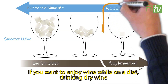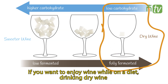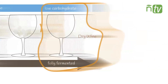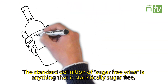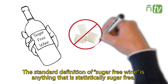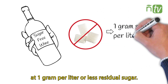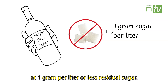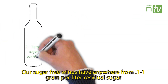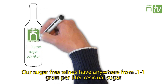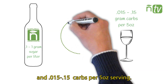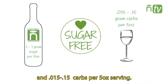If you want to enjoy wine while on a diet, drinking dry wine that is fully fermented will have little or no residual sugar. The standard definition of sugar-free wine is anything that is statistically sugar-free, at 1 gram per liter or less residual sugar. Our sugar-free wines have anywhere between 0.1 and 1 gram per liter residual sugar, and 0.015 and 0.15 carbs per 5-ounce serving.